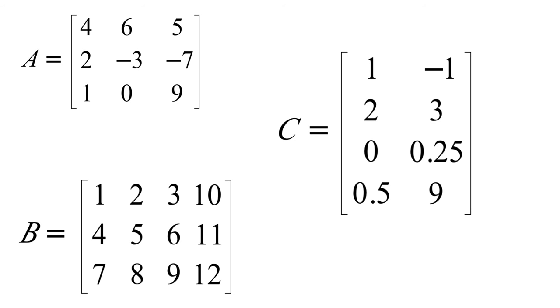And as a recap, matrix A is still a three by three matrix. Matrix C is a four by two matrix, four rows, two columns. And matrix B is a one, two, three row by one, two, three, four. So this is a three by four matrix.